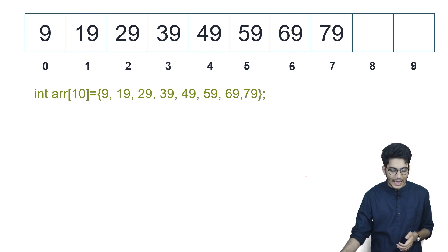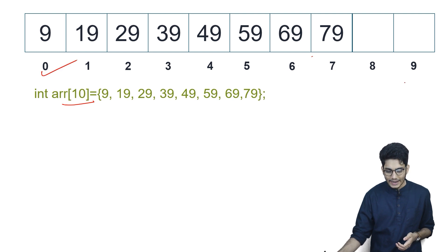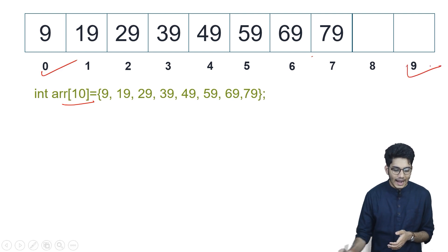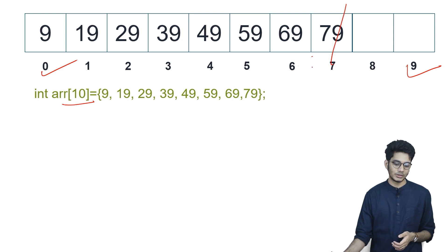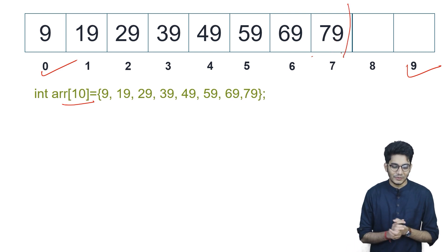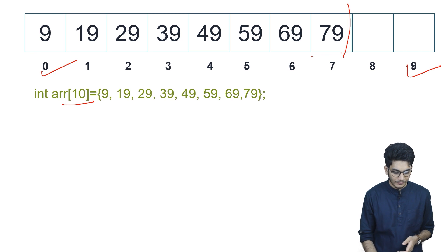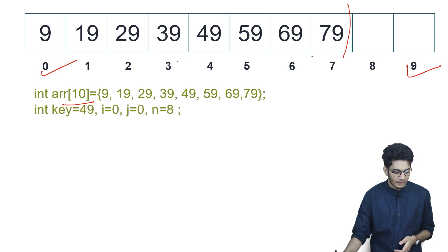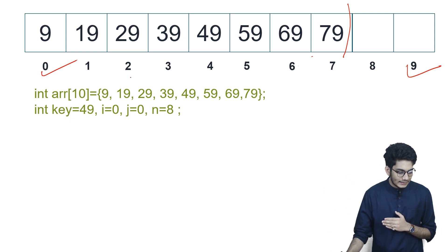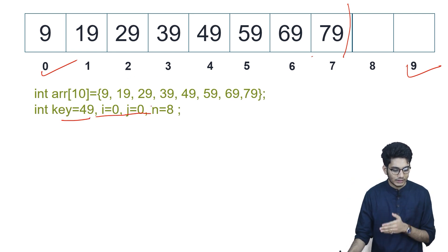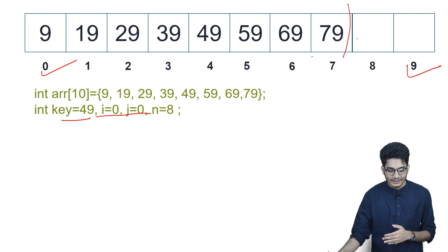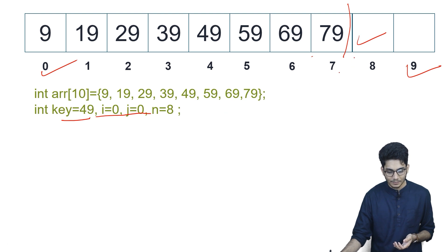Now looking at the code: we have declared an array of size 10 and we have values till the 7th position. We have a key — this value to be removed — which is 49. We have variables for the loop, and n is the last index. Normally we will traverse up to n.